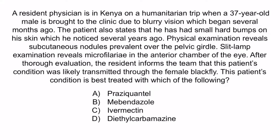Hopefully from the question, you noticed that this patient has blurry vision, subcutaneous nodules, and a slit lamp exam has revealed microfilariae in the eye. Collectively, these findings should make you think of Onchocerca volvulus or Loa loa. These are both parasitic roundworms that can cause skin changes and vision changes. However, Loa loa is transmitted by the deer fly, horse fly, and mango fly, whereas Onchocerca volvulus is transmitted by the female black fly.